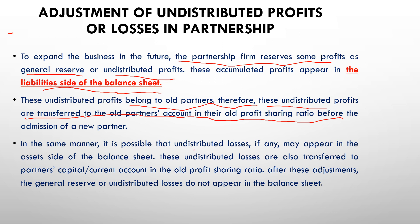In some cases it is possible that there are undistributed losses — agar profit ki jagah loss ho jaye. To naturally si baat hai, agar profit ho raha tha to hum usko capital account mein credit karte; agar loss hai to old partners ke capital account mein debit kiya jayega, minus kiya jayega — sirf old partners ke liye, kyunki agar profit old ko milna hai to loss bhi old ko hi bear karna hoga. So debit from the old partners' capital account in the old profit sharing ratio. Yeh reserves kisi bhi tarah ke ho sakte hain — general reserve, profit and loss reserve, reserve fund, workman compensation fund, accumulated profit, undistributed profit.